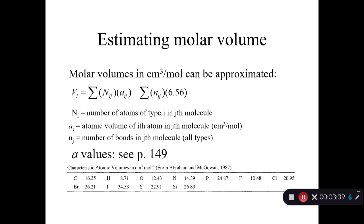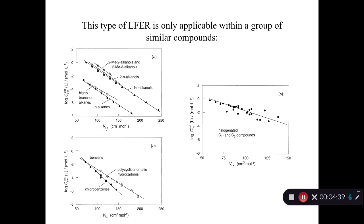To do this, we have to estimate the molar volume of our chemical. We did this in the example problem for the alkanes and estimating their aqueous solubility. You can read more about this in the textbook on page 149. Basically, you have an equation where the molar volume is the sum of each atom's atomic volume multiplied by its count. For example, 10 carbons times 16.35 gives 163.5. Then you subtract the number of bonds in the molecule times 6.56 — and notice that a double bond or triple bond each count as one bond.